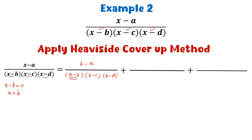For the second fraction, we put the second factor x minus c equal to 0 and get x equal to c. Now we replace the value of x by c, but not in the factor from where we have obtained the value of c.